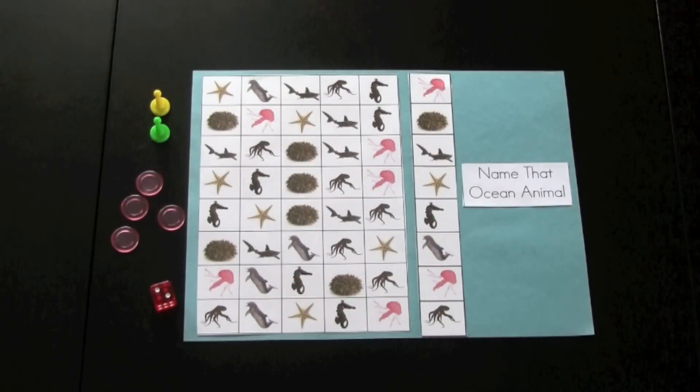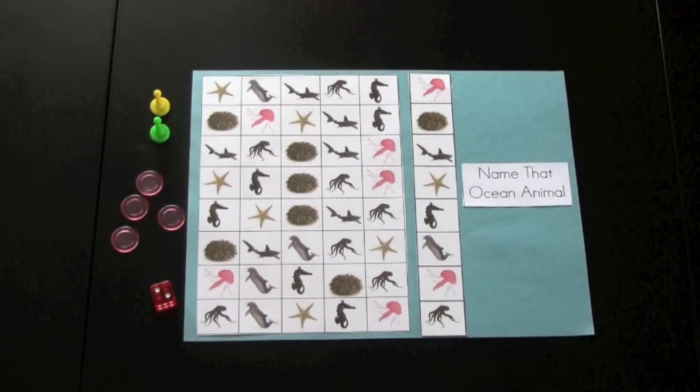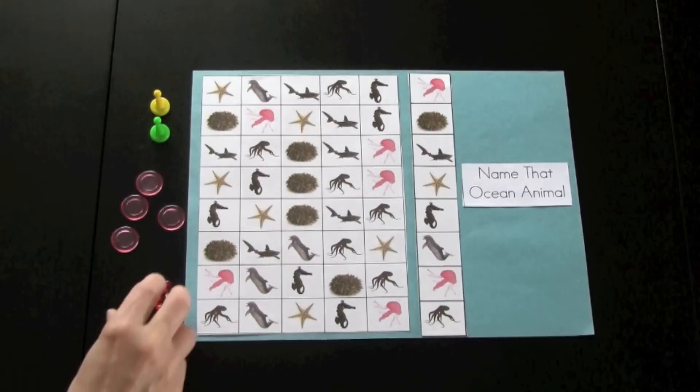This game is a partner game. Each player would have the same game board. It is called Name That Ocean Animal. It would be used after reading the emergent reader Exploring the Sea with All the Octopus, where they have been introduced to all these sea animals and their names. This is a game that would be a follow-up to see if the children can remember the sea animals' names. I am going to demonstrate how to play the game.